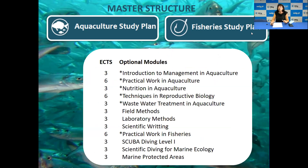Now let's look at the optional modules on offer. These change from year to year, but most are offered annually. Examples include: introduction to management in aquaculture, practical work in aquaculture, nutrition, techniques in reproductive biology, wastewater treatment, field methods, laboratory methods, scientific writing, practical work in fisheries, scuba diving, and scientific diving — which requires a prior first-level certification — and marine protected areas. Modules marked with an asterisk belong to our master; others can be chosen from related master's programmes.